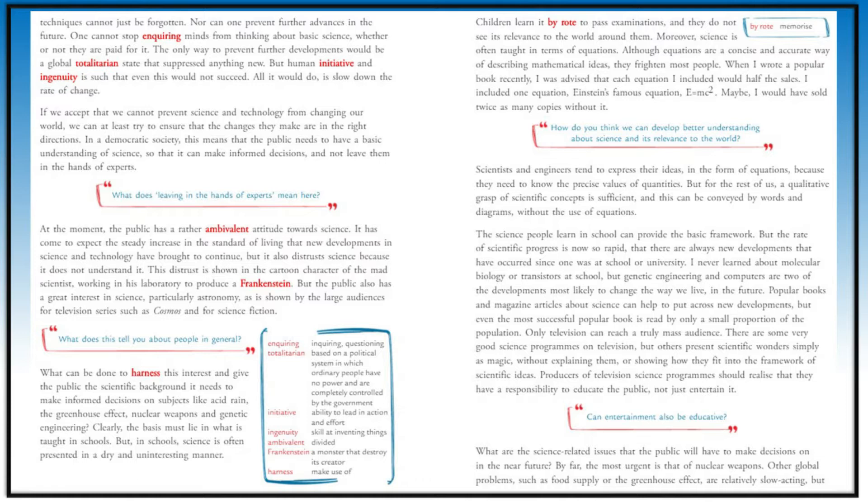The author says we cannot stop science and technology from changing the world, but we can see and make sure that the changes are made in the right way, in a positive way. He talks about society—people should have basic understanding of science so that they can take proper decisions and should not leave everything only to the experts.